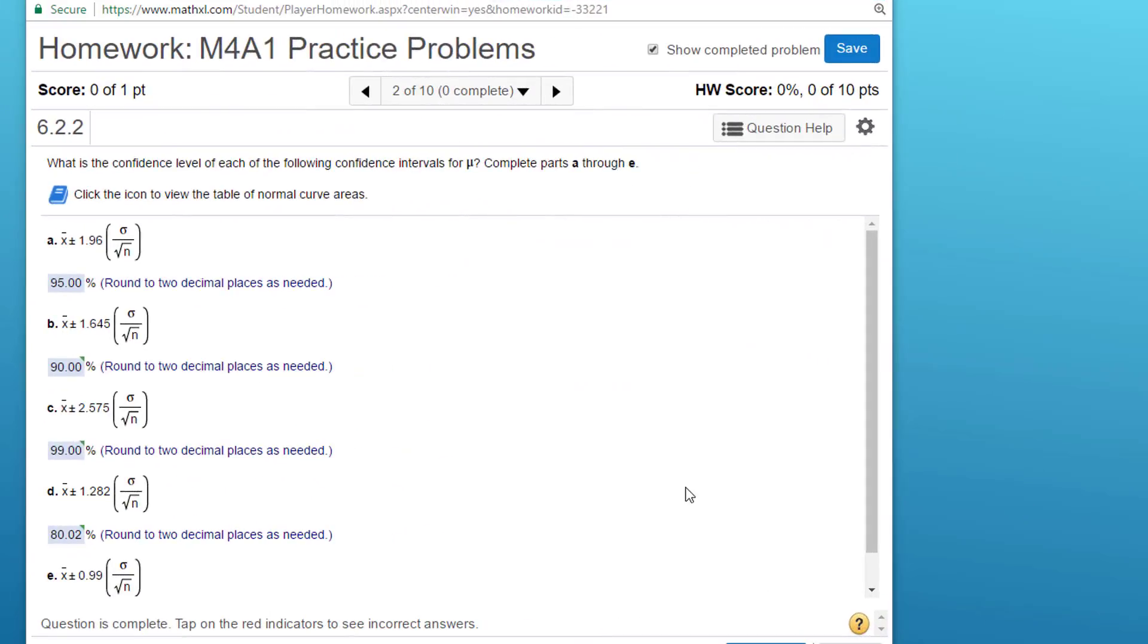This is the second problem I was asked about. And it also has to do with the normal curve. We know that when we're reading this, they're asking what is the confidence level of each of the following confidence intervals for the mean. And we're given the icon to go to the normal curve tables, which we don't want to do.